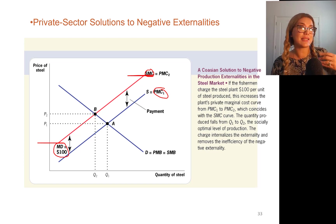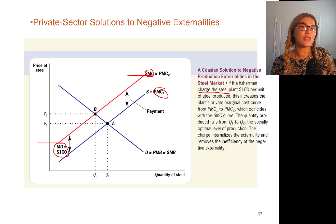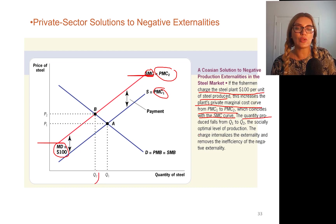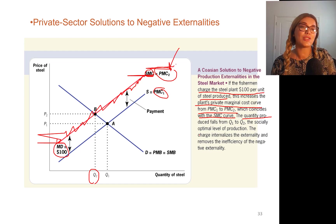If the fishermen are assigned property rights over the fisheries and the river, then fishermen can charge the steel plant a hundred dollars per unit of steel produced. This increases the plant's private marginal cost curve from PMC to PMC2, which coincides with the social marginal cost curve. So the quantity produced falls from Q1 to Q2, because now the social marginal cost corresponds to the new private marginal cost — the cost of producing steel just got a hundred dollars more expensive per unit.